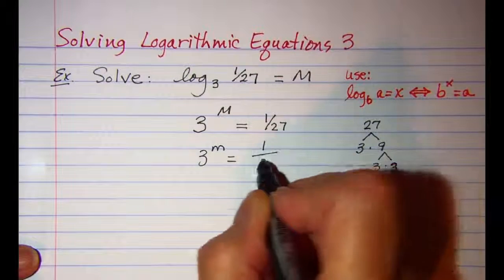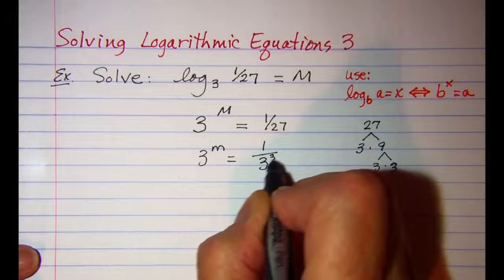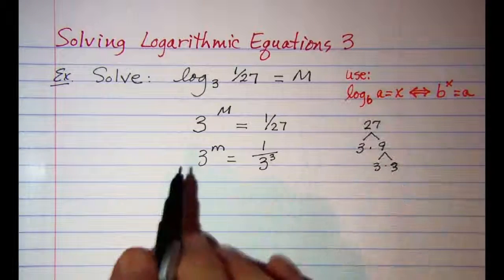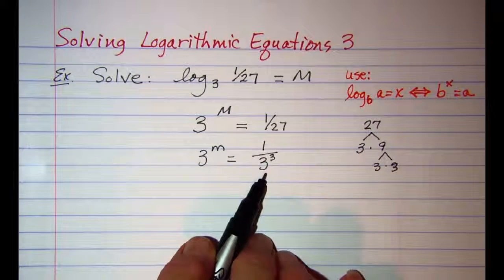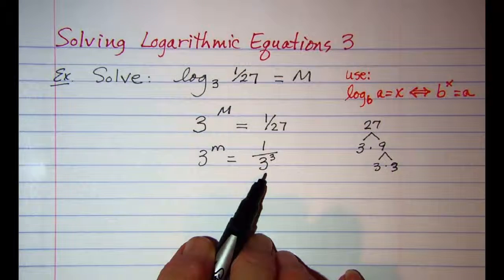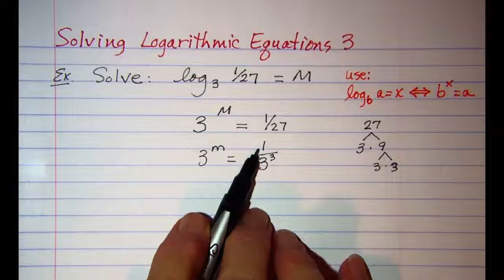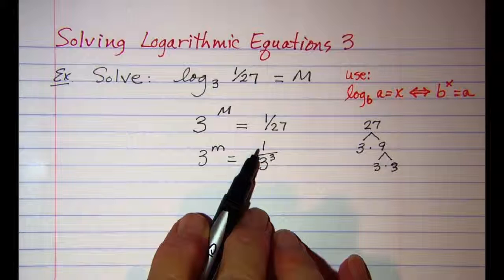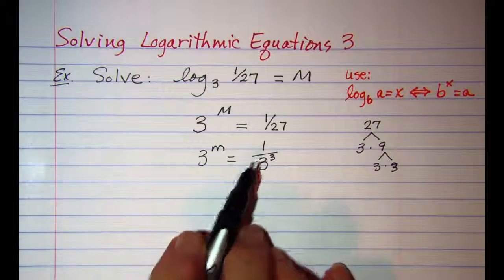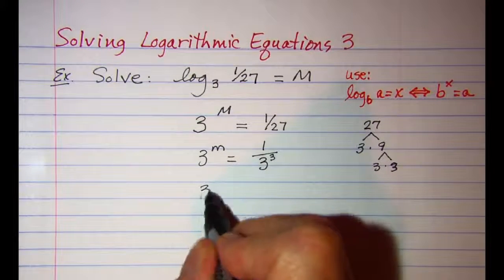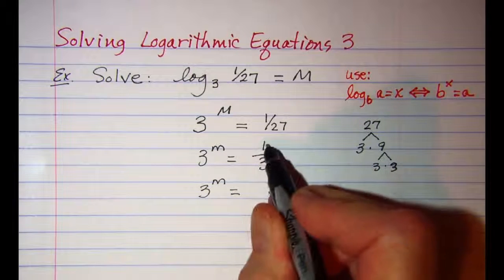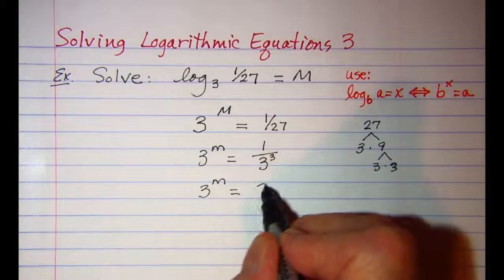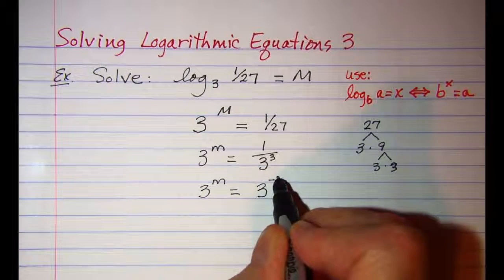So that's 1 over 3 to the third power. What I'd like to do is move this expression up into the numerator, and the way we can do that is by changing the sign of the exponent. So let me copy the left side, and then this one I'll move up to the numerator and it'll become 3 to the negative 3 power.